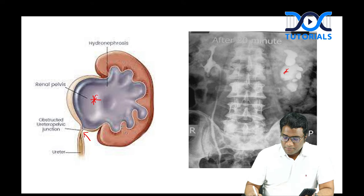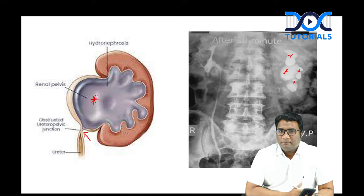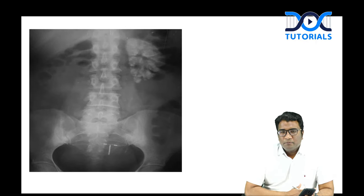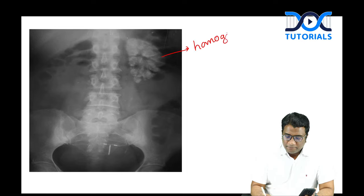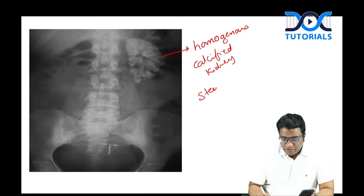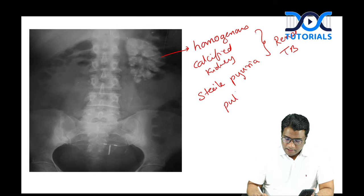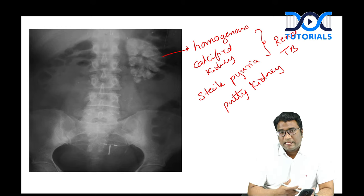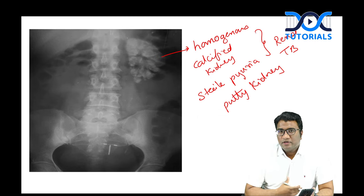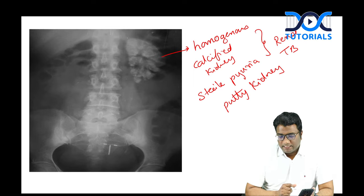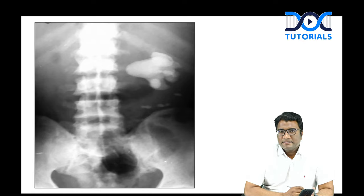In PUJ obstruction, there is gross hydronephrosis and contrast opacifies those areas occupying most of the parenchyma. Differentiate from putty kidney — putty kidney shows homogeneous calcification associated with sterile pyuria, suggesting renal tuberculosis. It has a ground-glass-like calcification pattern, whereas a cement kidney represents the later stage with dense calcifications.